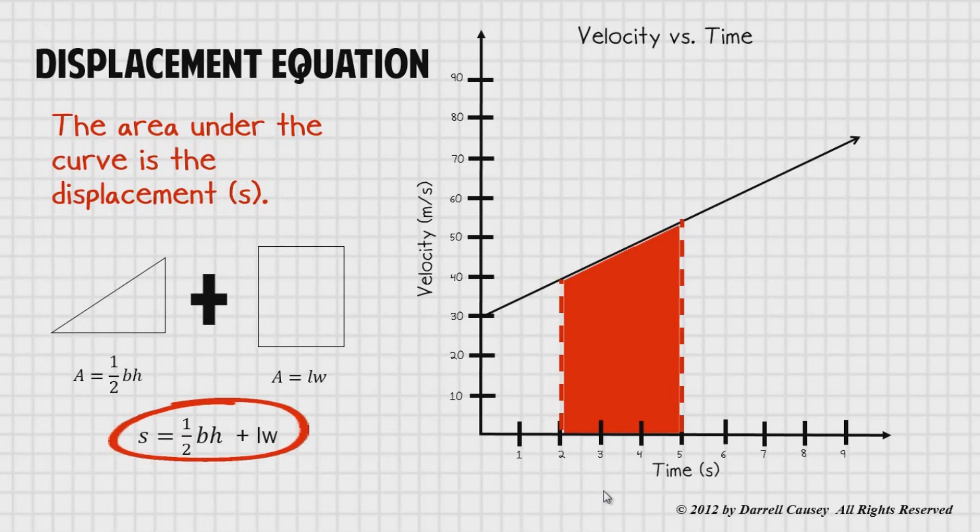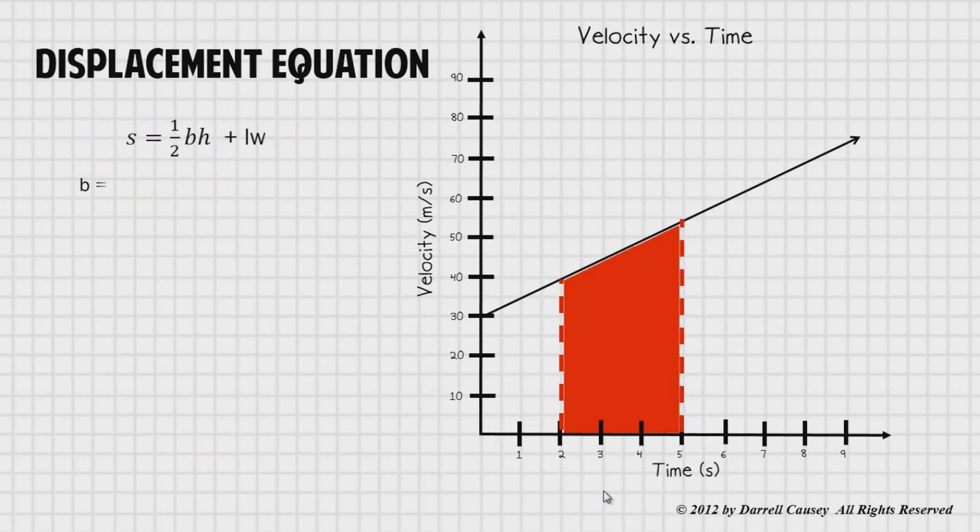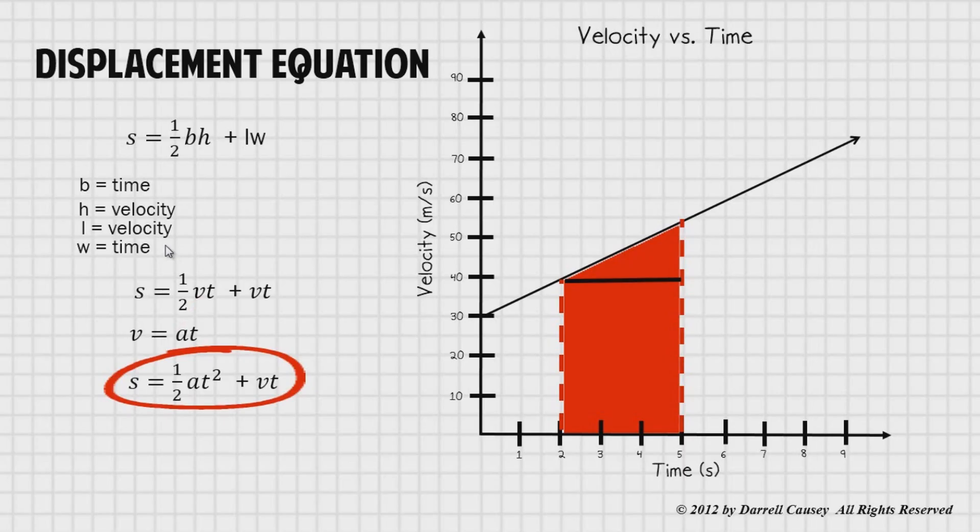But that's in algebraic terms or math terms. Let's make it look a little bit better for us in physics based on velocity, acceleration, and time. Now I'm going to rewrite it. And let's let the base equal time. And you'll notice over here, that's exactly, there's the base is time. And so h is velocity. Right there. And length is velocity. And width is time. Wow. So if I take my values here and substitute them into my equation, I get this new equation. s equals one half the velocity times time plus velocity times time. But let's get a little acceleration in there. I know that velocity equals acceleration times time. And if I substitute that in there for velocity, then that's going to give me one half the area times squared plus velocity times time. And that's not just any velocity, by the way, that's initial velocity.